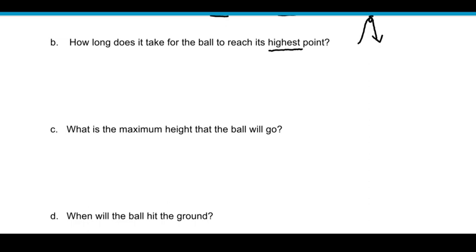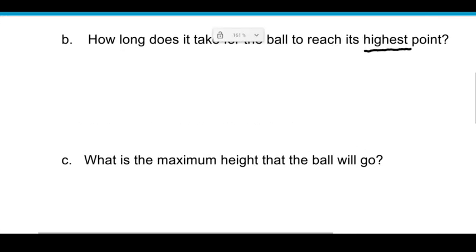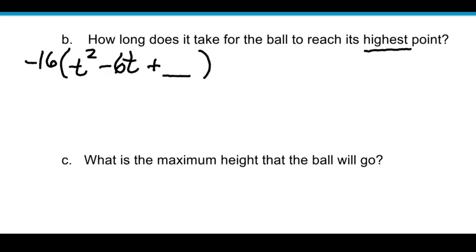And so I'm going to go ahead and use completing the square. So I'm going to take my original function, and in order to complete the square, I have to factor out any leading coefficient, so I'm going to factor out the negative 16, and I have a t squared. The next term, if you recall, was 96 plus 96, so if I divide that by negative 16, I actually get a minus 6t. And now I am going to complete the square, so I'm going to leave a blank space, because I'm going to add the missing piece for completing the square. And then in the very back, we had a plus 6 in our equation.